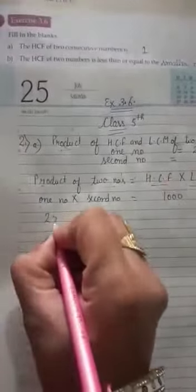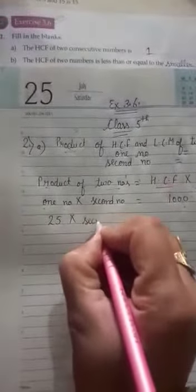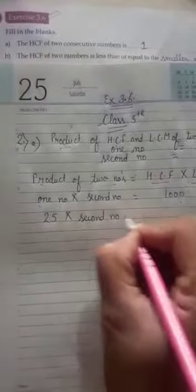Then one number is 25. We want to find the second number. Second number is equal to 1000.